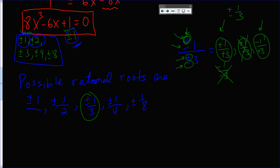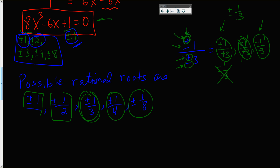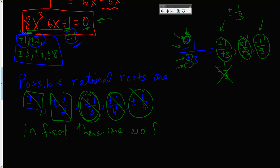If you took all those possible rational roots — the ten candidates — and one by one plugged them in for x, the left side will not be zero. That is, none of these are solutions. In fact, there are no rational solutions.